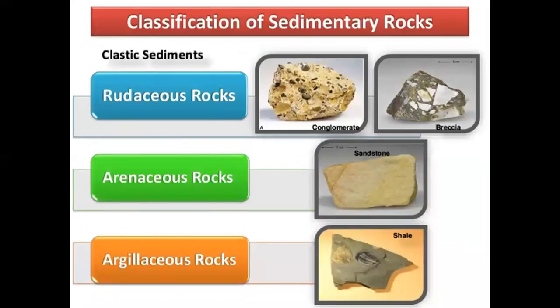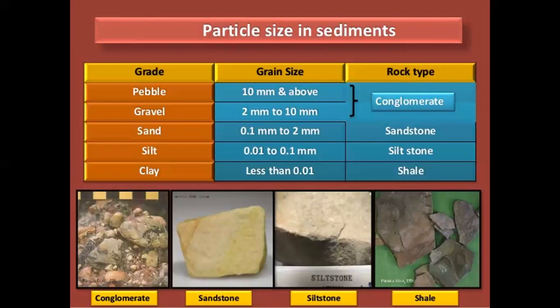Classification of sedimentary rocks: rudaceous — grain size greater than 2 mm; arenaceous — grain size between 1 to 2 mm; argillaceous — grain size less than 1 mm. Examples are conglomerate, sandstone, and shale. Particle size in sediments, according to grade: pebble, gravel, sand, silt, clay.